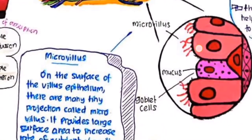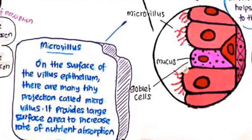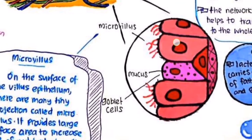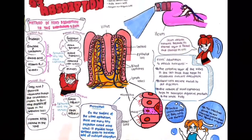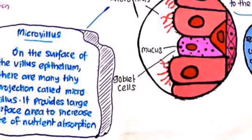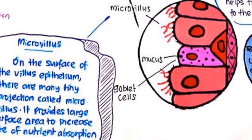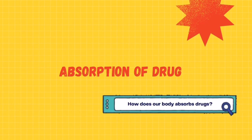Moving on to microvilli. Microvilli are located on the surface of the villus epithelium. Microvilli can adapt to the absorption of digested food due to the large surface area they provide, which increases the rate of nutrient absorption. You may wonder: how does the body absorb drugs, such as medicine that we consume when we are sick?